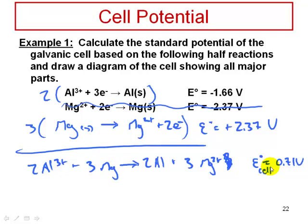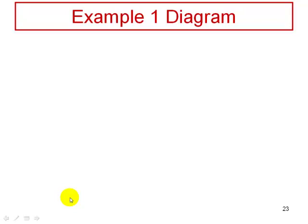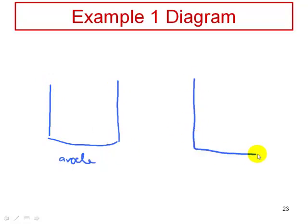What is getting oxidized in this reaction? The magnesium gets oxidized, and by default, aluminum gets reduced. There is a net transfer of electrons from solid magnesium to aluminum ions in solution. In the galvanic cell, we put the anode compartment on the left and the cathode compartment on the right.